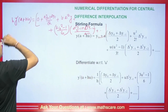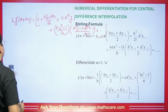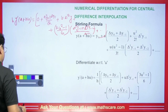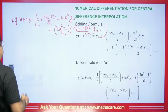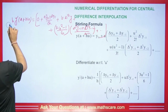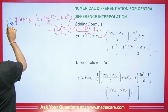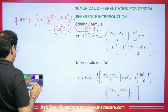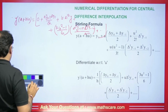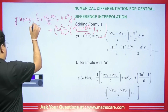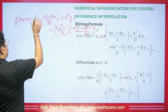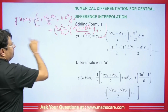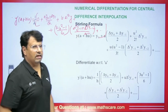Now, since the derivative involves H, we remove H from here and divide by H. So 1/H comes forward, giving us the final derivative formula.